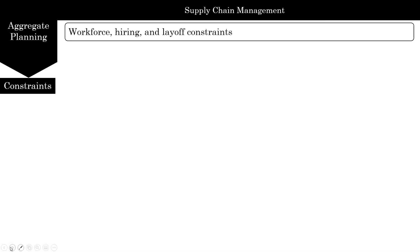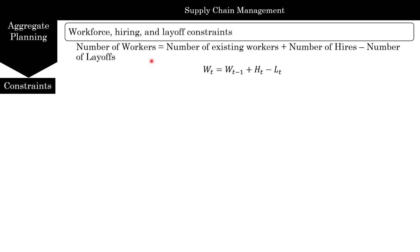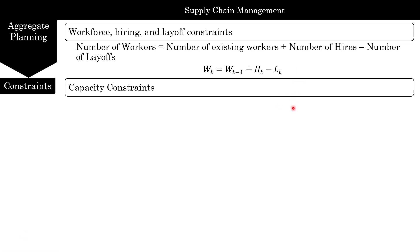Now let's look at the constraints. The first constraint is the workforce balance: the number of workers in a time period equals the number of workers in the previous period, plus how many you hire, minus how many you fire. For example, if last month you had 30 workers, hired 5, and fired 2, you'd have 30 + 5 - 2 = 33. So: Wt = W(t-1) + Ht - Lt, applied for all six time periods.